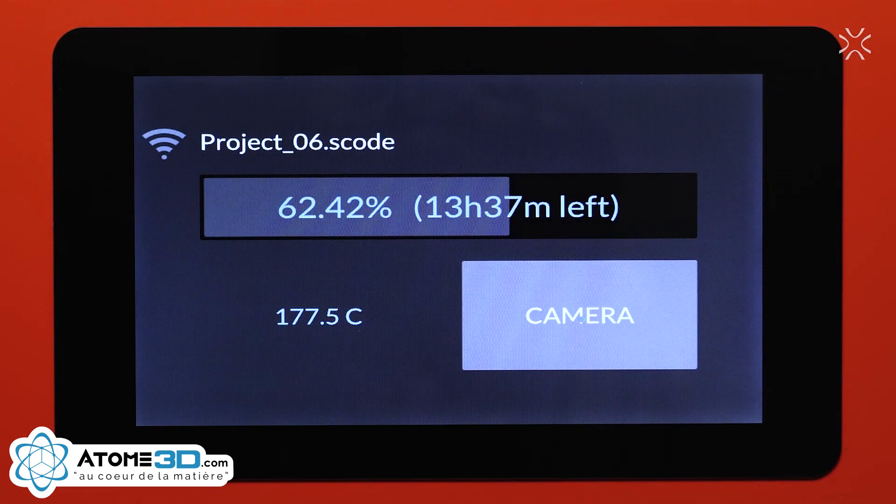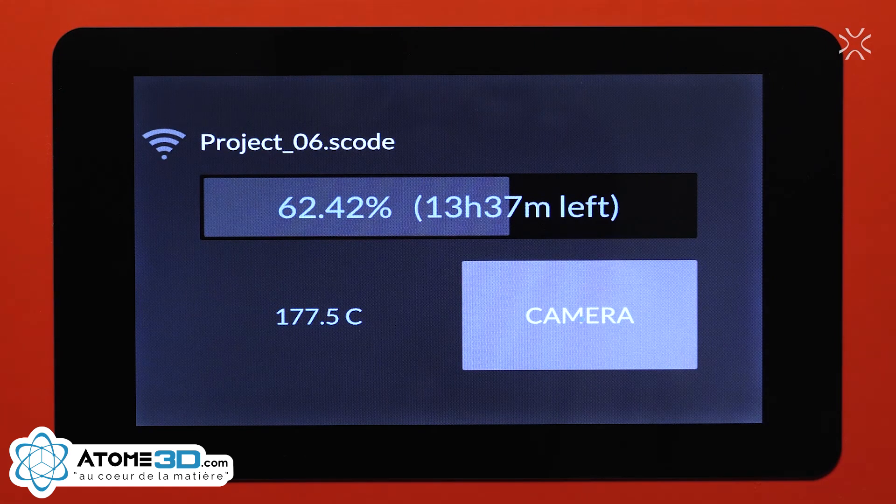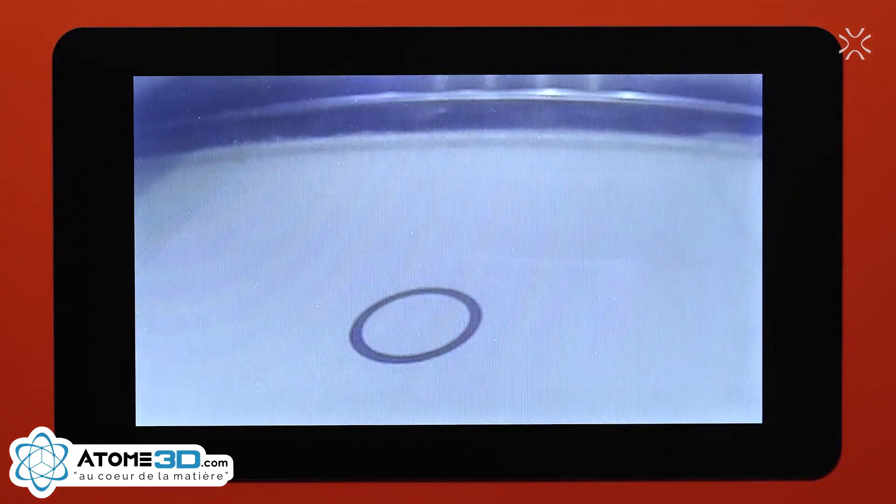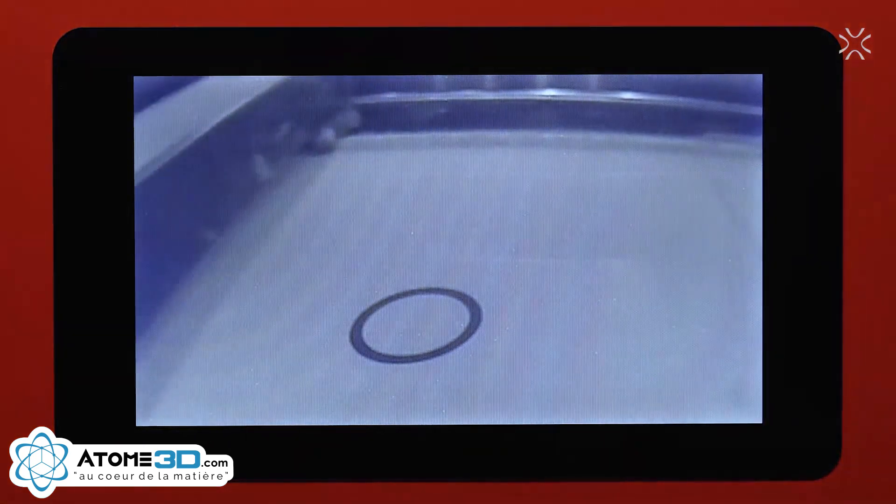While Lisa Pro is printing, you can check the process via inbuilt camera. To do so, just click the Camera button on the printer and you will get a live view of your print. It will last for 10 seconds.